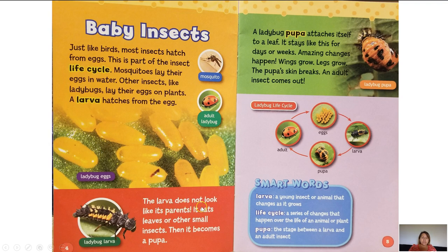The larva does not look like its parents. It eats leaves or other small insects, then it becomes a pupa. This is a ladybug larva — it does not look like the adult ladybug at all. We could not even tell that this was a ladybug because it changes shape and its color is different.